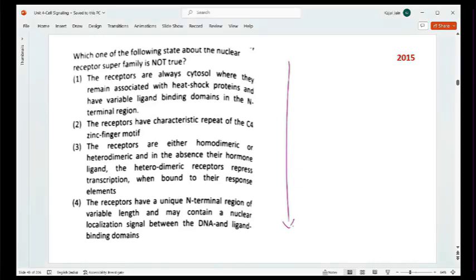Done everyone? Which of the following statements about the nuclear receptor super family is NOT true? First option, the receptors are always cytosol where they remain associated with the heat shock proteins and have variable ligand binding domains. Second, the receptors have characteristic repeats of the C4 zinc finger motifs. Then the receptors are either homodimeric or heterodimeric and in the absence of their hormone ligand the heterodimeric receptor represses the transcription when bound to their response element. And last, the receptors have a unique N-terminal region of variable length and may contain a nuclear localization signal between the DNA and the ligand binding domains.